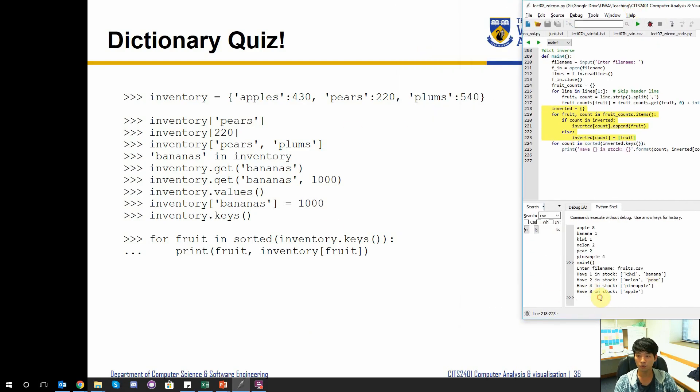So we have this thing called inventory. For my purpose, I just call it I. We have apple that is 430, pears which is 220, and we have plums which is 540. So we created our inventory. So we can go inventory of P. So this should return us 220, correct? We are accessing what is the value associated with the key that we passed in.